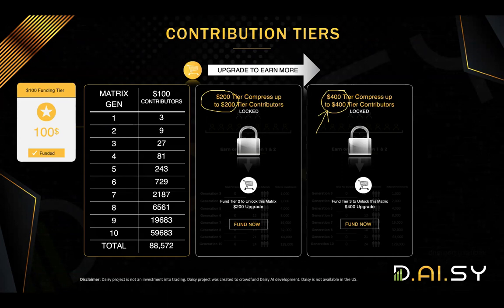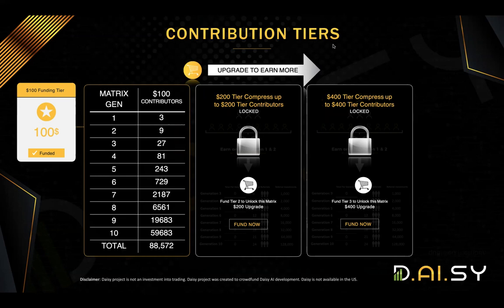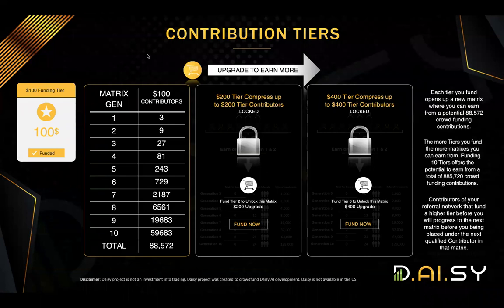You will see how many members are placed on the different generations. Generation one will be three, generation two will be nine, generation three will be 27. By the time you fill up all 10 generations, you will have 88,572 members sitting in your matrix. The compression applies to the matrix, but it doesn't apply to the direct referral bonus.